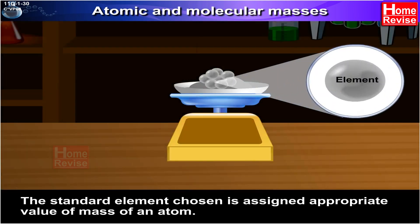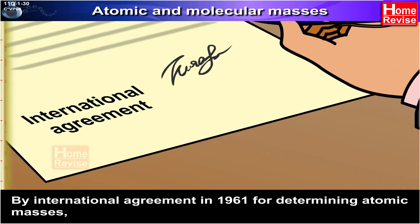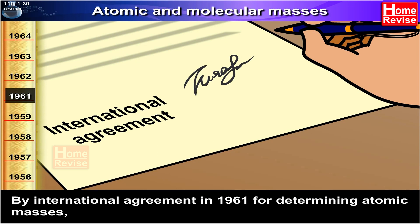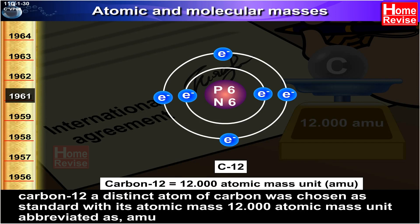The standard element chosen is assigned an appropriate value of mass of atom. By international agreement in 1961, for determining atomic masses, carbon-12, a distinct atom of carbon, was chosen as standard with its atomic mass of twelve atomic mass units, abbreviated as amu.